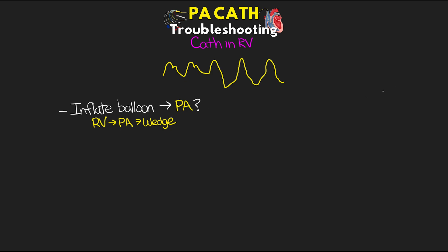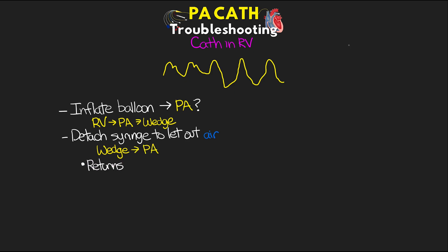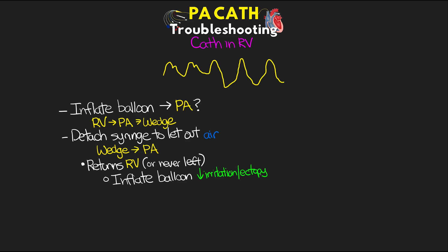Once that wedge is observed, we want to detach the syringe to remove the air, and we should see a return of the normal PA waveform. Now if it returns to RV, or we never actually left the RV, then we want to ensure that the balloon is inflated. This minimizes any irritation in the right ventricle — it basically pads the tip of the catheter and can help prevent some of the ectopy that can happen.